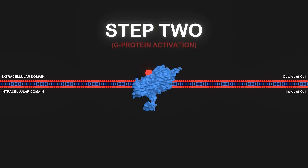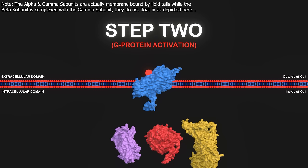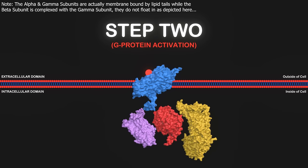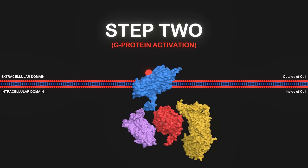The second step is G-protein activation. Once the G-protein coupled receptor undergoes a conformational change, it enables an interaction with a heterotrimeric G-protein located on the intracellular side of the membrane. This is on the inside of the cell. G-proteins are composed of three subunits, the alpha subunit, the beta subunit, and the gamma subunit.